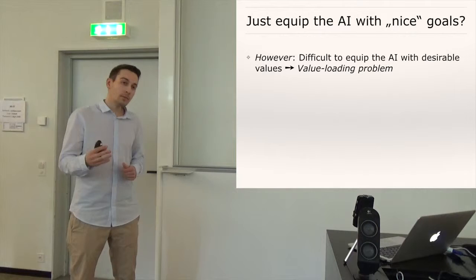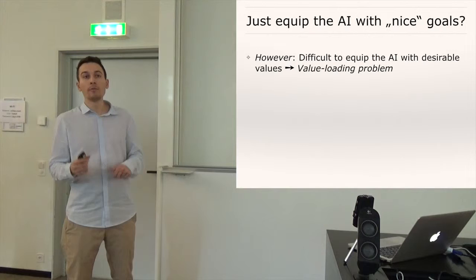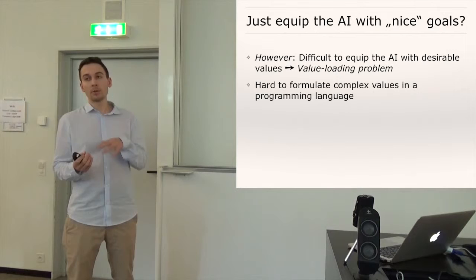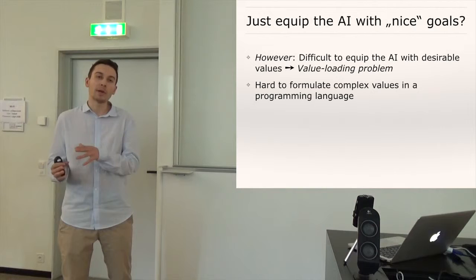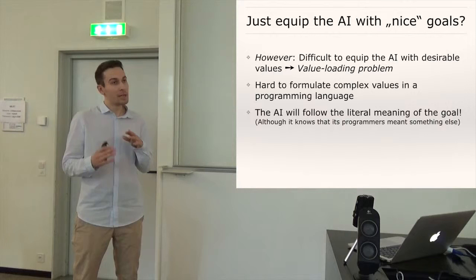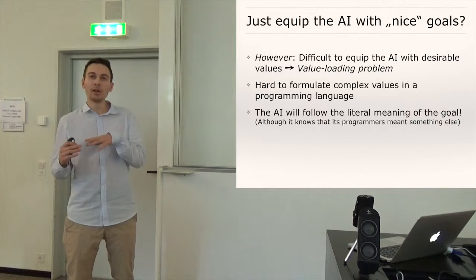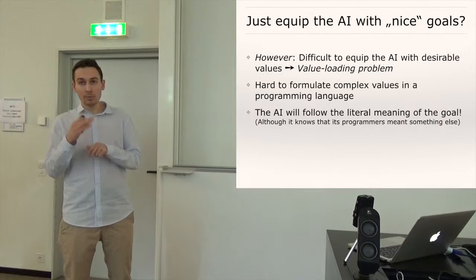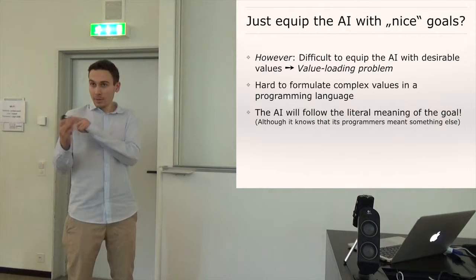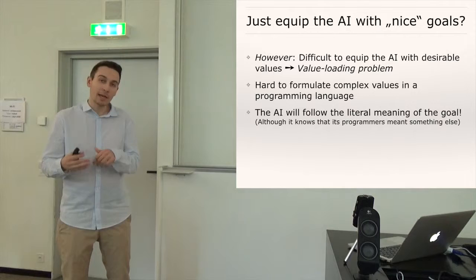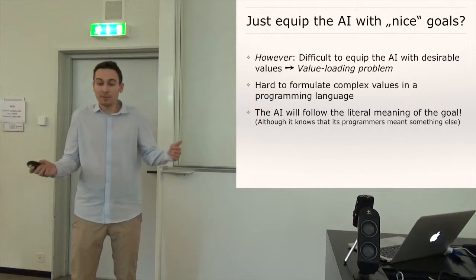program into an AI desirable values and this has been called the value loading problem in the literature. And one aspect of this problem is that it's just very hard to express complex concepts or values like for example preserving human autonomy or reducing suffering in a programming language and transfer this into the AI. And also we have to keep in mind that we have to be very careful what we wish for and if you just try to program into the AI an approximation of what we mean then it will just go with the literal meaning of the goal we program into it because it has no reason even if it completely understands that the human programmers to build the AI had something completely different in mind there's no reason for it to pick the intended meaning instead of the literal meaning except we program somehow into it okay we are not so good at programming can you please pick the intended meaning instead of the literal one but how do you program this in programming language that's pretty hard.